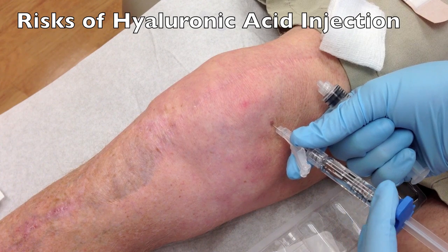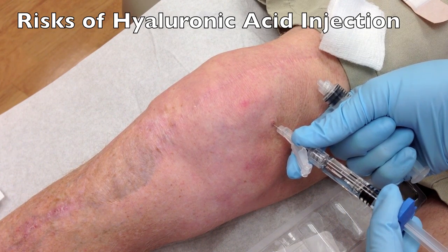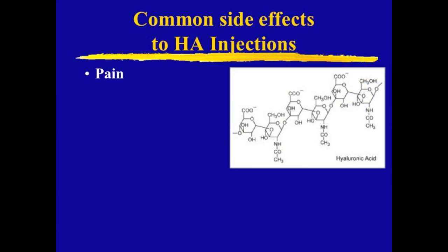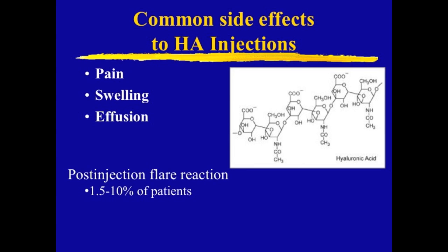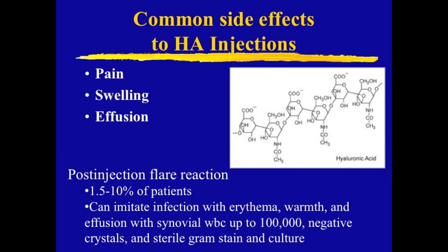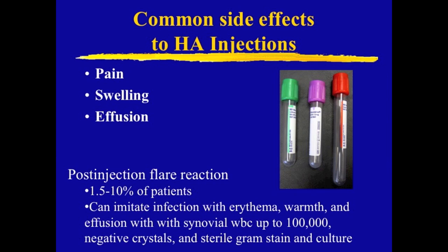Risks of side effects are higher with hyaluronate injections, including pain — especially if the knee space is missed — swelling, effusion, and post-injection flare at a much higher rate than cortisone injections. Unfortunately, the hyaluronate flare reaction can mimic an infection, with erythema, warmth, and an effusion with a high synovial white count. Post-injection flare is a default diagnosis if the effusion has no crystals and a negative culture. Thus, any red warm knee after an injection should be aspirated and sent for cell count and differential, crystals, gram stain, and culture.